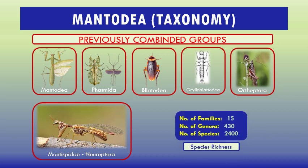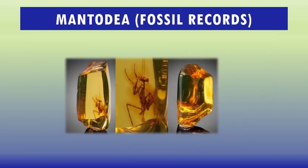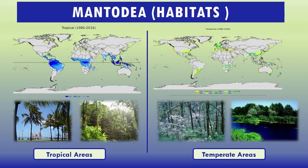In terms of species richness, Mantodia consists of 15 families, 430 genera, and approximately 2,400 species. Some examples of praying mantises are found in Cretaceous amber about 100 million years old. Regarding habitats, they are predominantly found in tropical regions but some also live in temperate areas.